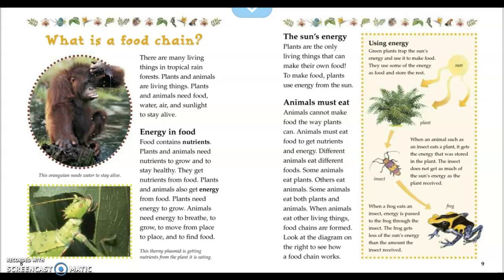Food contains nutrients. Plants and animals need nutrients to grow and stay healthy, and they get nutrients from food. Plants and animals also get energy from food. Plants need energy to grow. Animals need energy to breathe, to grow, to move from place to place, and to find food. The caption notes that this orangutan needs water to stay alive, and this thorny phasmid is getting nutrients from the plant it is eating.